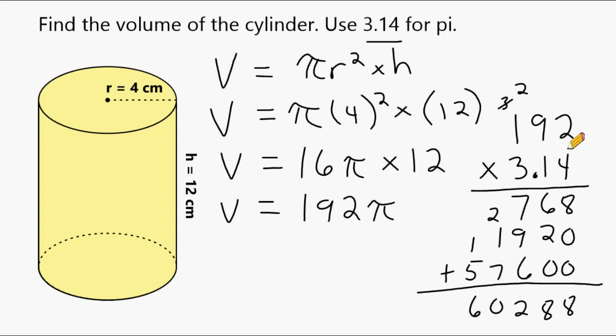And in the problem, we have two digits after our decimal, so the same must hold true on our answer. So the volume of this cylinder is approximately equal to 602 and 88 hundredths cubic centimeters.